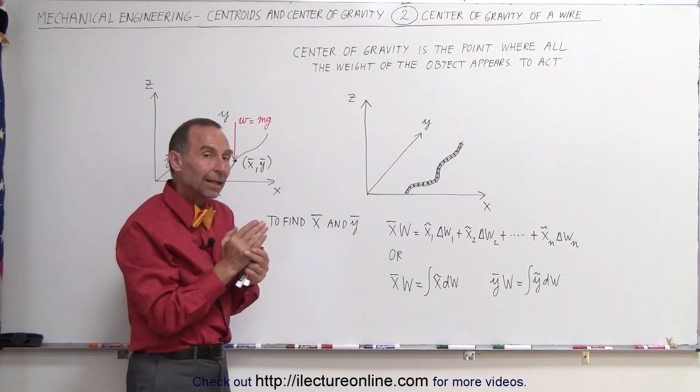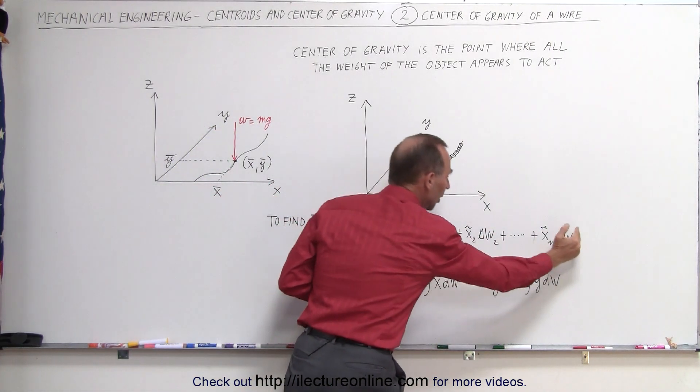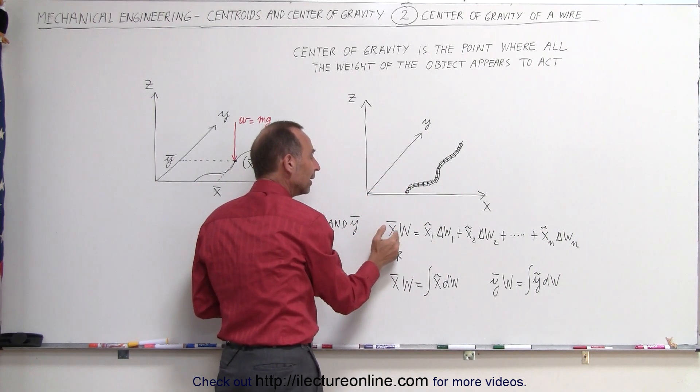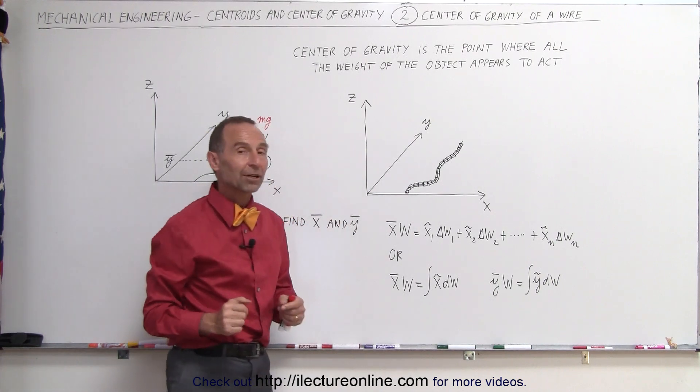And then you multiply that times the X coordinate of the center of gravity of each of the little pieces and you add it all up. That gives you the center of gravity of the whole wire times the weight of the whole wire, or I should say the X coordinate of the center of gravity of the whole wire.